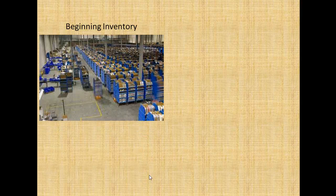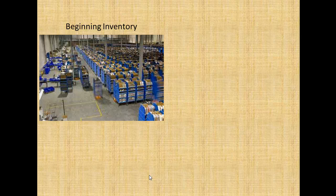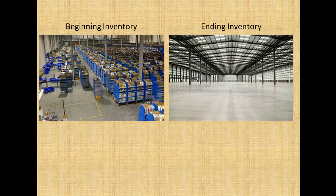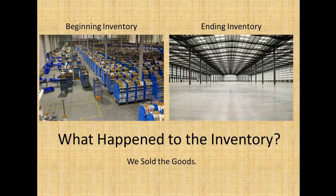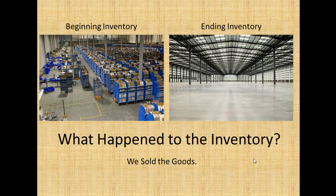For those still struggling a bit, I have a picture of a warehouse — this is beginning inventory, a warehouse that's just full of stuff. That's what they had at the beginning of the month. And they had a good month. At the end of the month, this is what they have left — this is your ending inventory. So what happened to the inventory? We sold it all. You take your beginning inventory minus your ending inventory and that gives you your cost of goods sold.